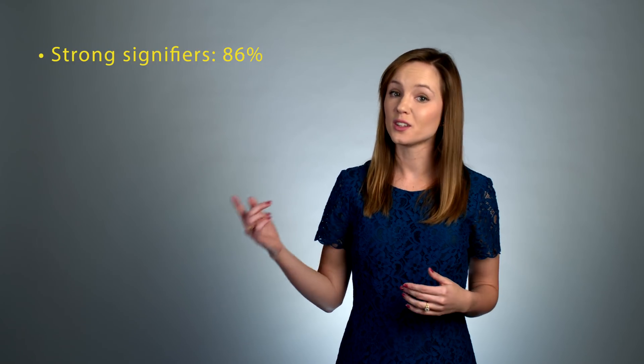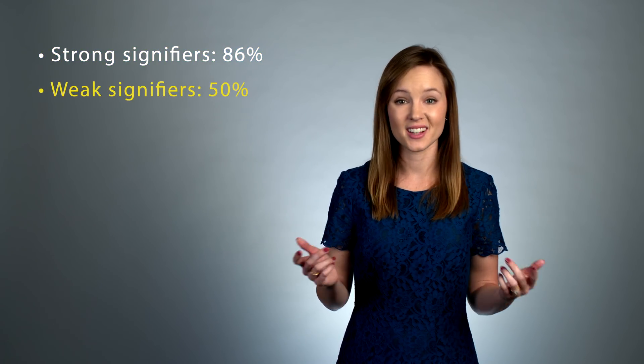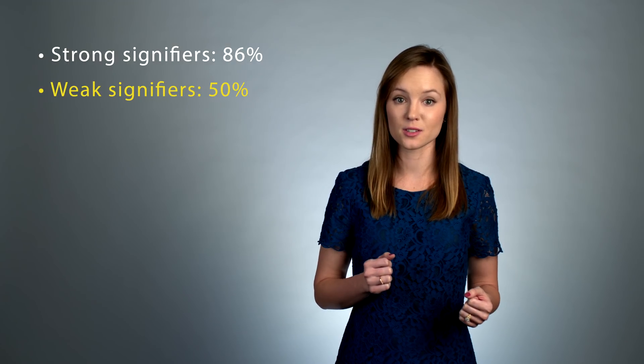But then in the weak version, only 50% followed that pattern and that's a statistically significant difference. And we can see that in the heatmap, so much more red is focused around the heading and very little is on the shop pearl link.